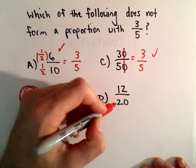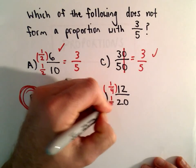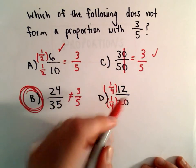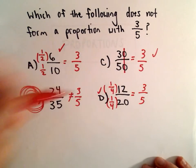And just to be complete, notice 12 over 20. If we multiply the numerator by 1 fourth and the denominator also by 1 fourth, equivalently you're dividing top and bottom by 4, we would get 3 over 5. So again, D does work.